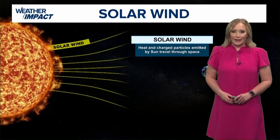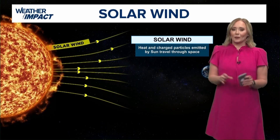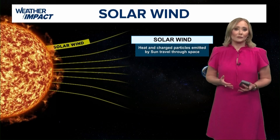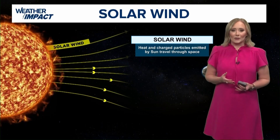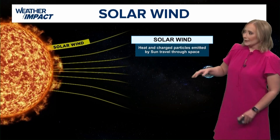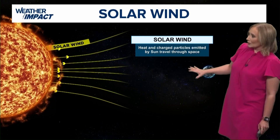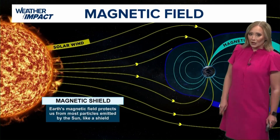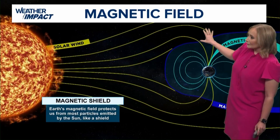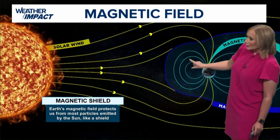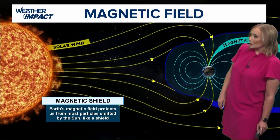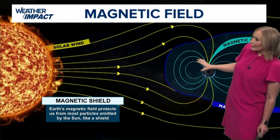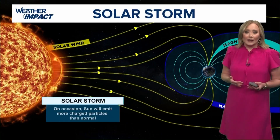Well, the Aurora Borealis, also known as the Northern Lights, is a combination of a bunch of different things out in space. But first and foremost, it starts with what we call the solar wind. The solar wind is heat and charged particles that are emitted by the sun that then travel through space. You also have a magnetic field surrounding Earth. Earth's magnetic field protects us from most particles that are emitted by the sun, kind of like a shield.